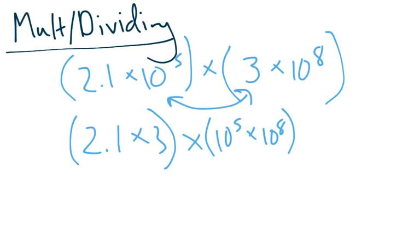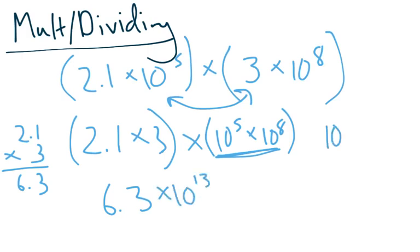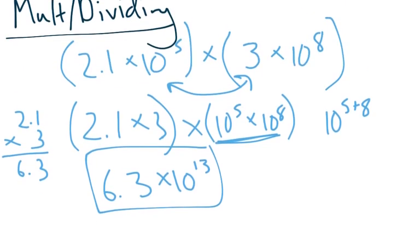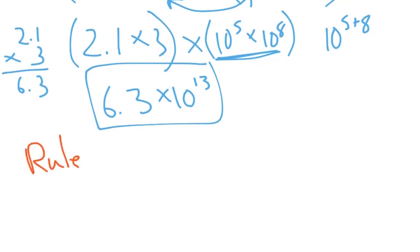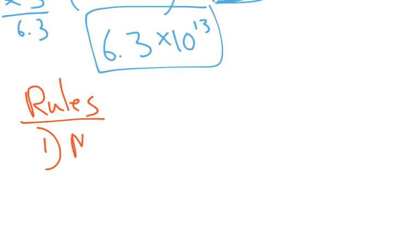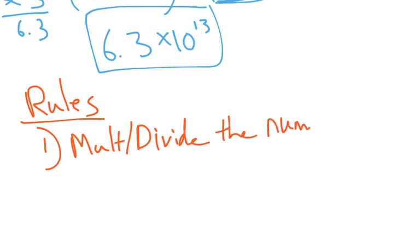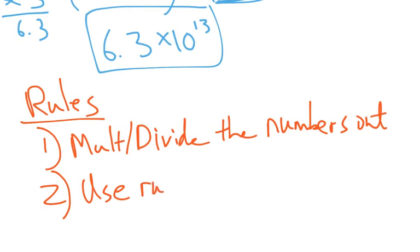And then here I just focus on this. That's 2.1 times 3. Well, that will give me 6.3. And here I can use rules of exponents to get times 10 to the 13th because I'm going to go 10 to the 5 plus 8. And that's actually it. That is all you do. And so when it comes to multiplying and dividing, let's write out the rules. You are going to multiply or divide the numbers out. And then 2, you use rules of exponents on the 10s.